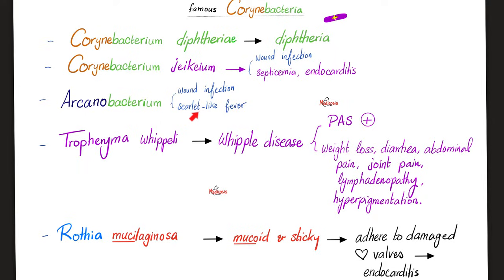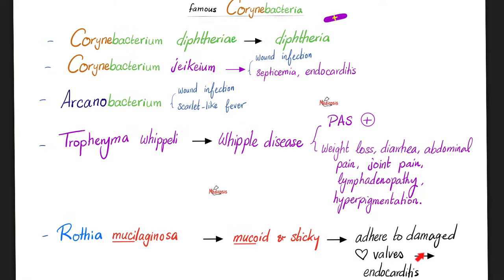Tropheryma whipplei causes Whipple disease. Tropheryma whipplei is periodic acid-Schiff positive because it loves sugar. Whipple disease is characterized by weight loss, diarrhea, abdominal pain, joint pain, lymphadenopathy, and skin hyperpigmentation. Rothia mucilaginosa — look at the mucin here — forms mucoid and sticky colonies that can adhere to your damaged heart valve, leading to subacute bacterial endocarditis.